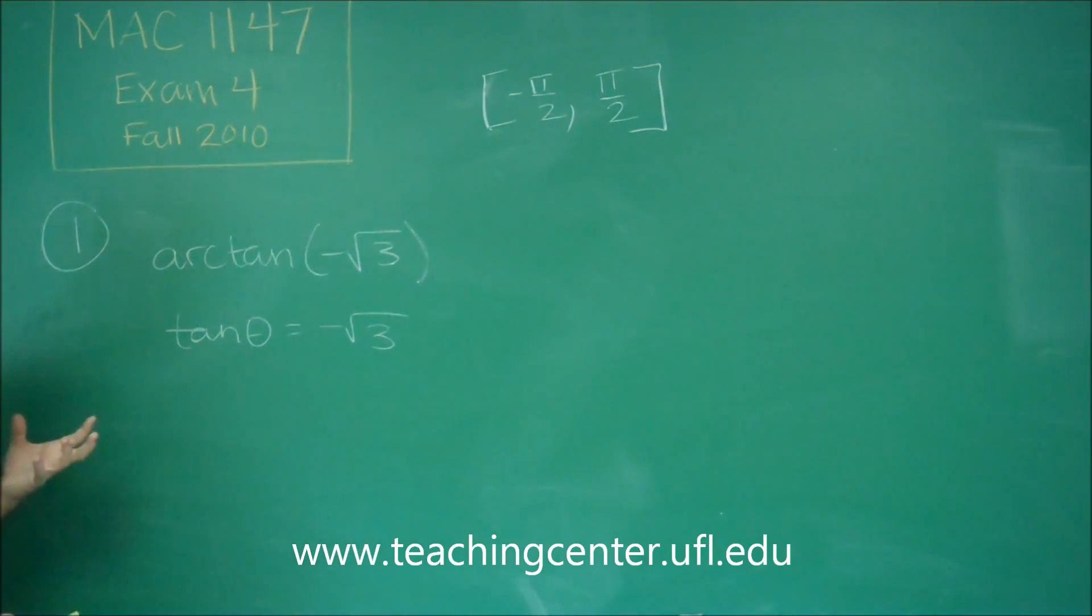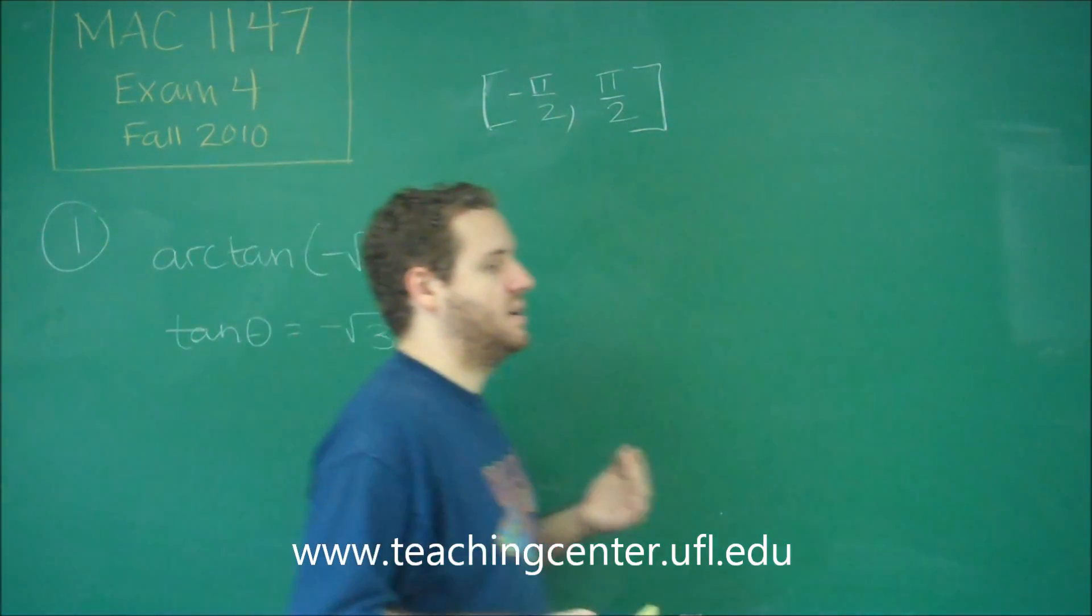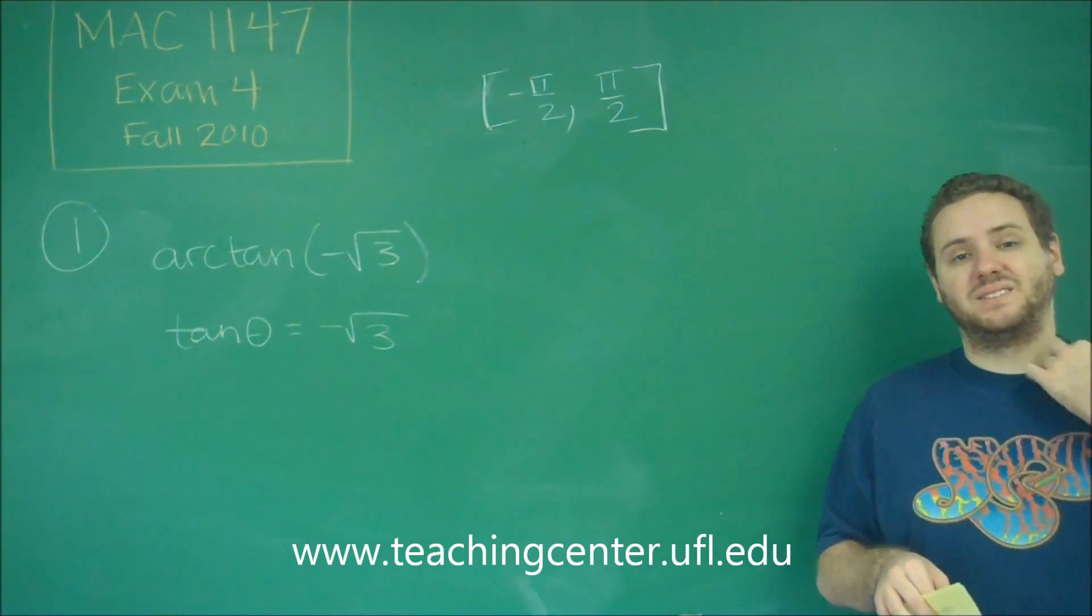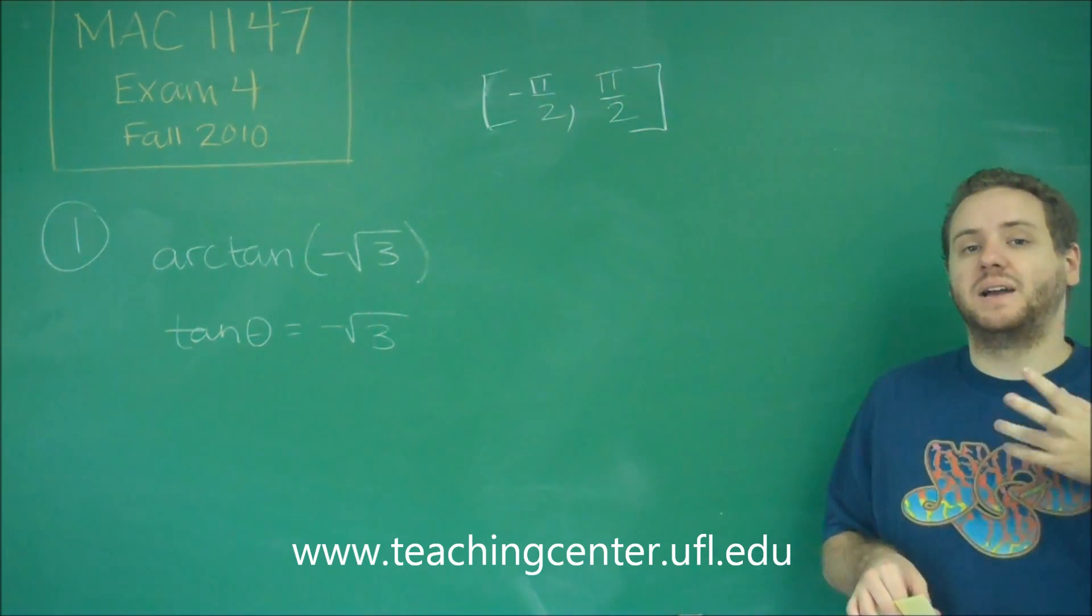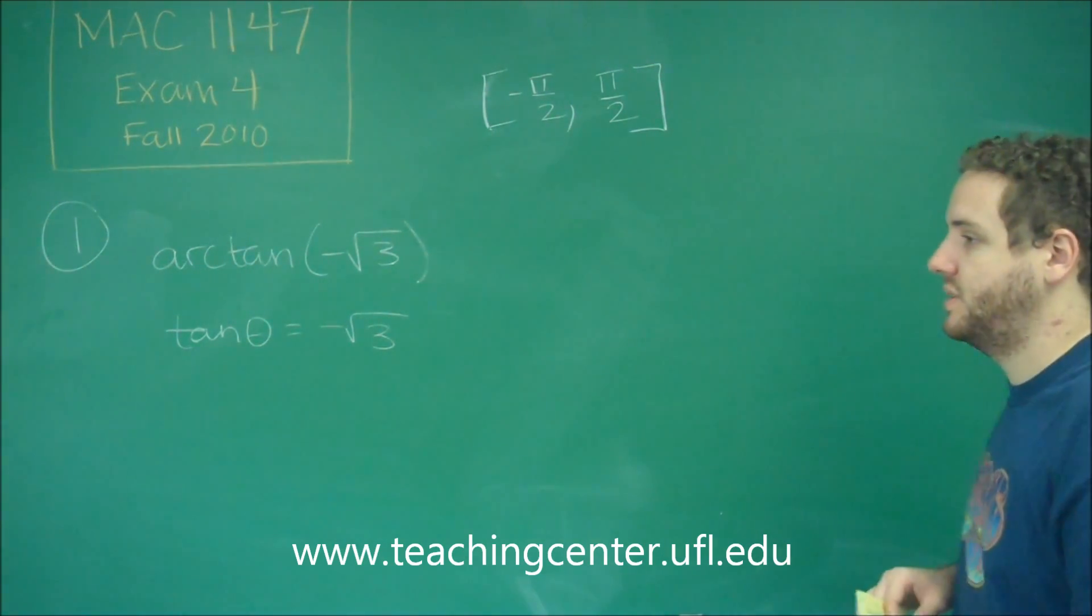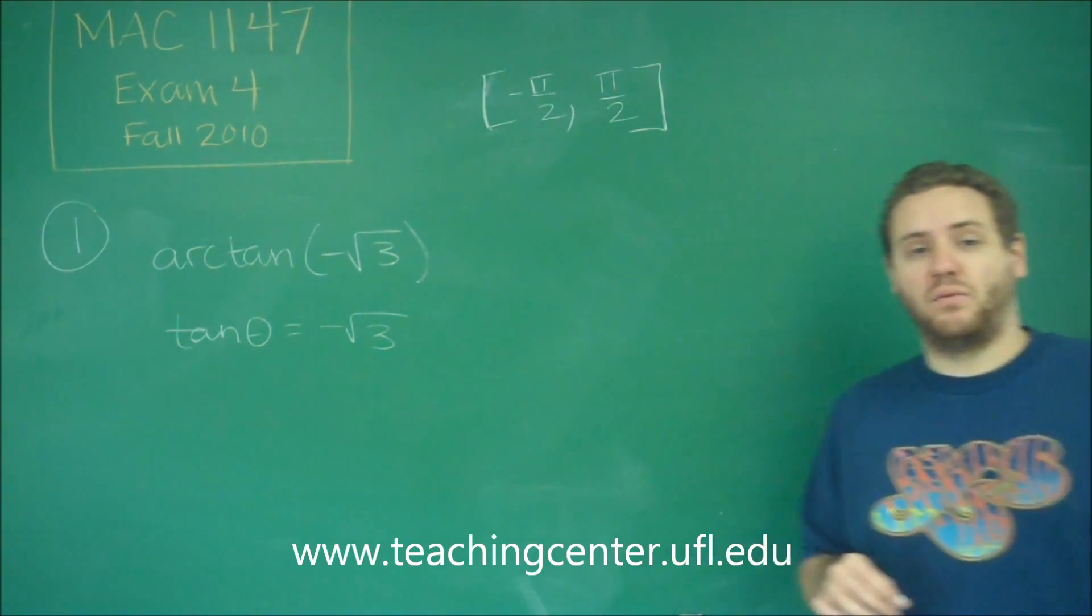So first you want to think, what reference angle of tangent gives you angles of square root of three? Remember that tangent is sine over cosine. So we want our sine to be root three over two and our cosine to be one over two. So that happens at the angles pi over three.